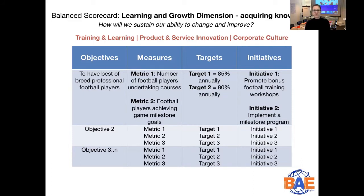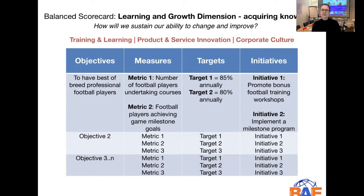Here, as an example objective, we have: to have best-of-breed professional football players. How do we measure this going forward? The first metric could be the number of football players undertaking courses that we send them on. And another metric could be the football players achieving game milestone goals that we set.